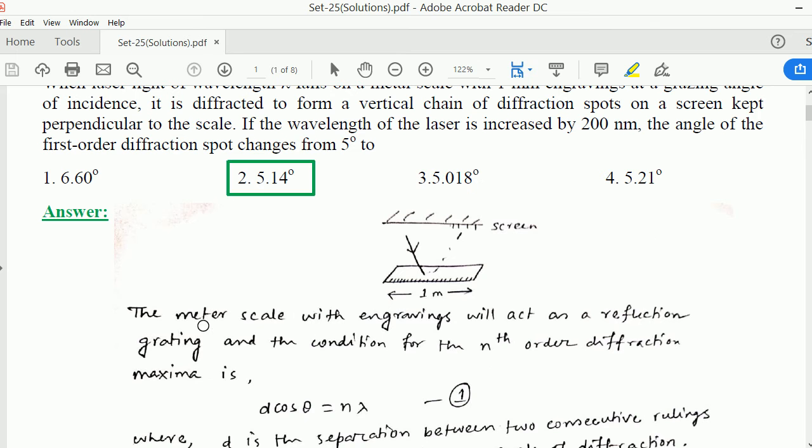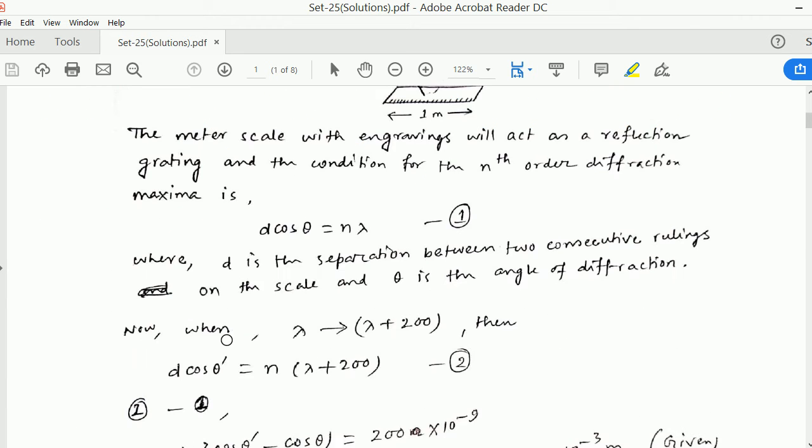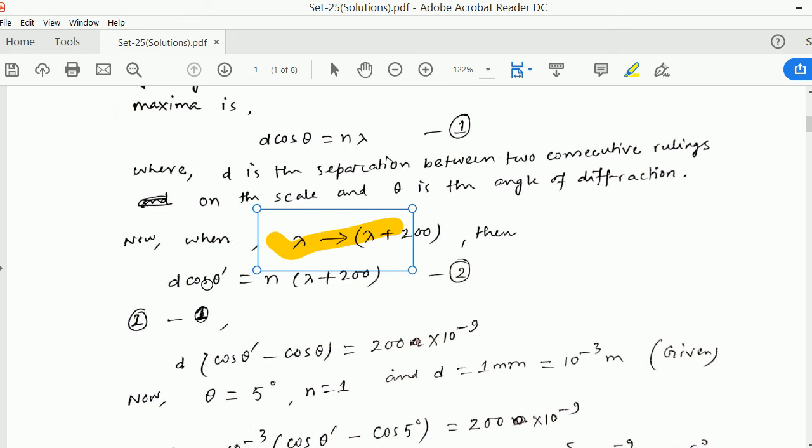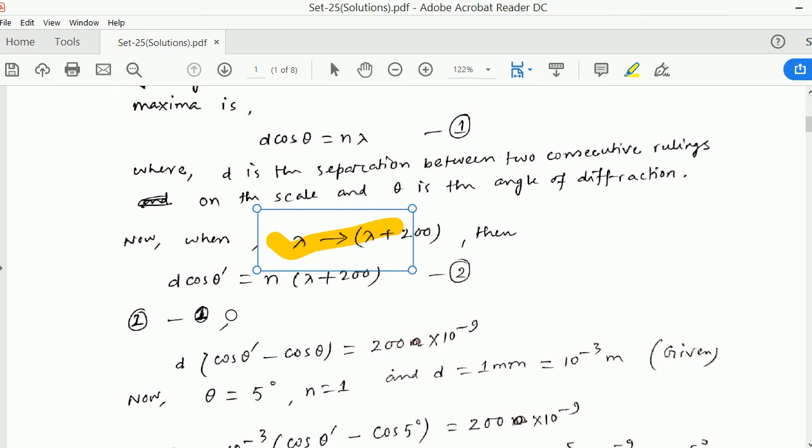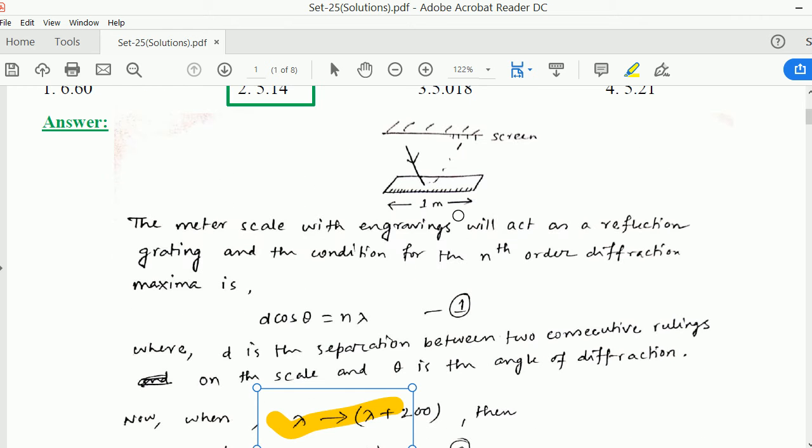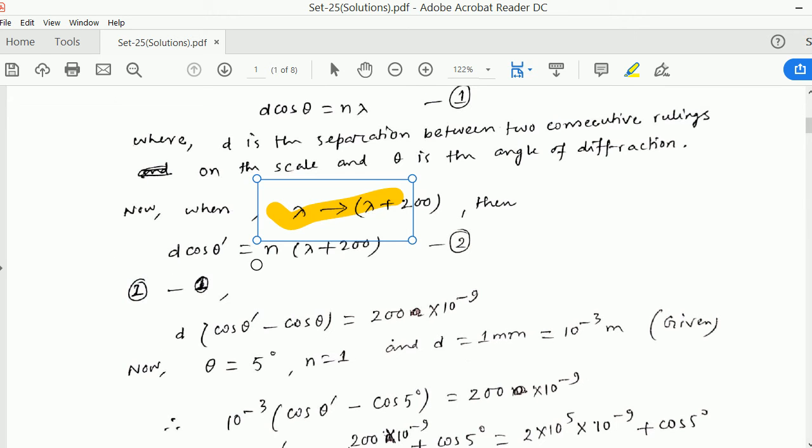Now when the wavelength of the laser light is increased by 200 nanometers, so lambda becomes lambda plus 200, then the angle of diffraction will be changed. So D cos theta prime equals N times lambda plus 200. We consider lambda in nanometers so we are not converting it here.